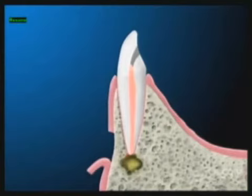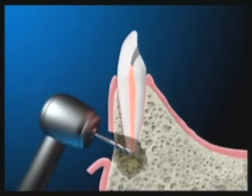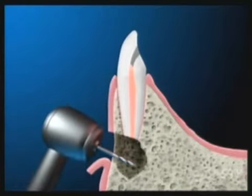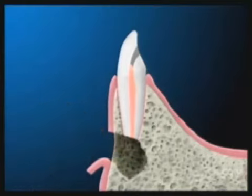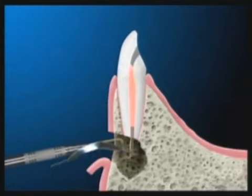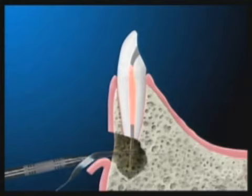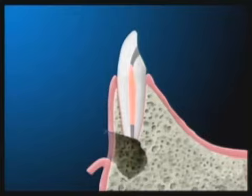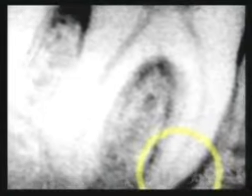Sometimes even after we remove the infected tissue in the root it doesn't go away, so we have to go in surgically to remove the infection from the root. Once we remove the infection, that area heals itself and the tooth can be saved.